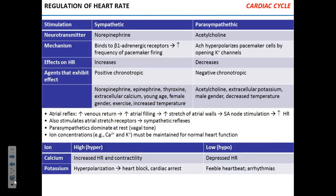These three factors — preload, contractility, and afterload — you have to understand how they contribute to stroke volume and regulate cardiac output. We talked about the athlete and the regular person at rest. The athlete has a lower heart rate, but stroke volume is much higher, so overall cardiac output is maintained. Cardiac output equals stroke volume multiplied by heart rate.